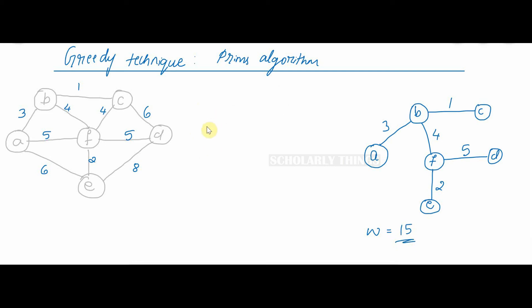Let's quickly summarize this algorithm. We started off with A. Then looked for the minimum edge, 3. A to B, 3.